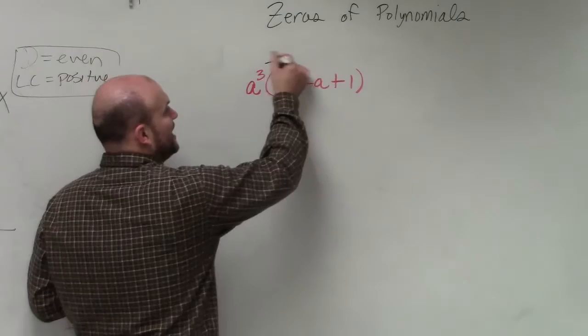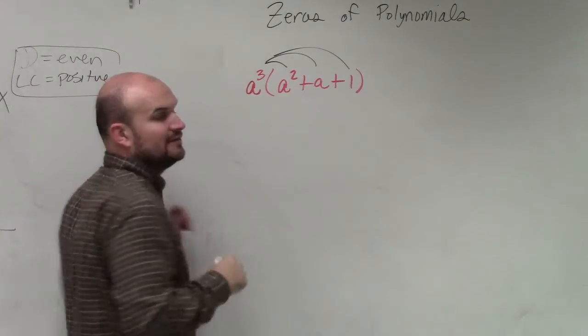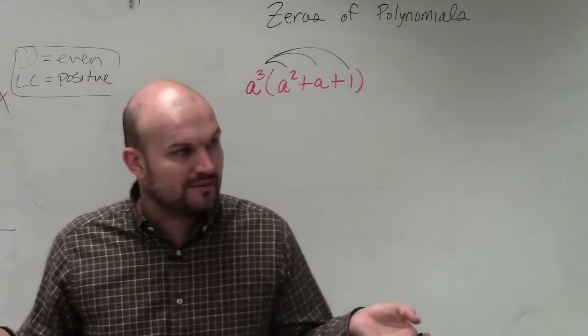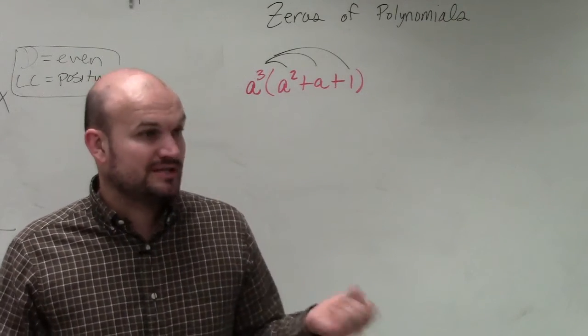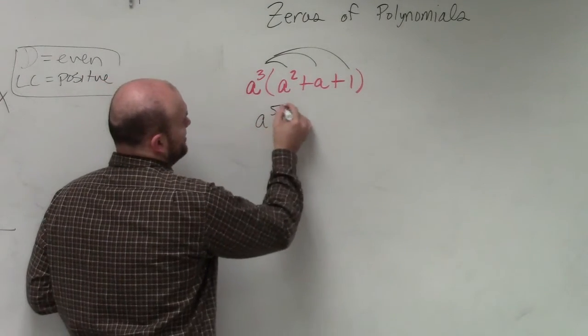So what we need to do is apply the product to simplify. So basically, I have a cubed times a squared. If you guys remember from Algebra 1, when you're multiplying monomials with exponents, you add the powers. So a squared times a cubed is going to be a to the fifth power.